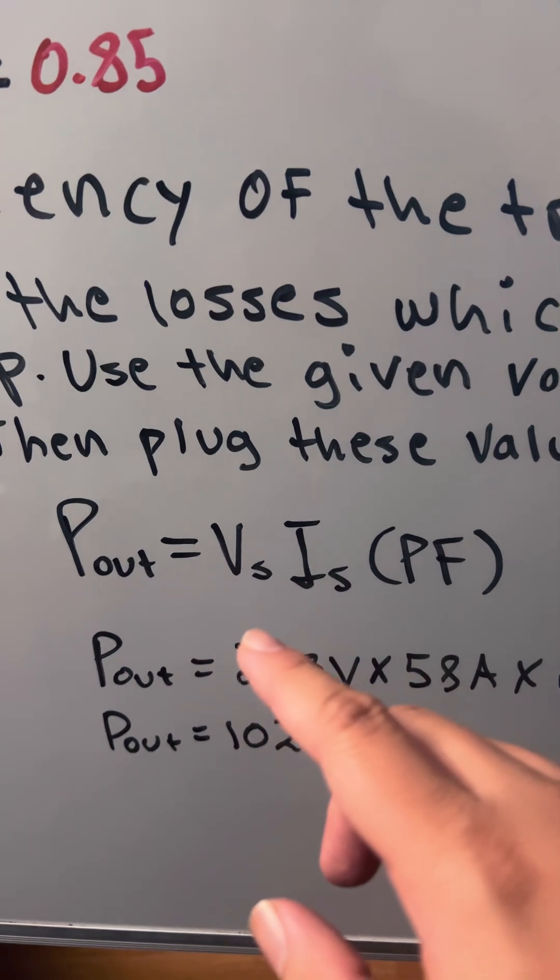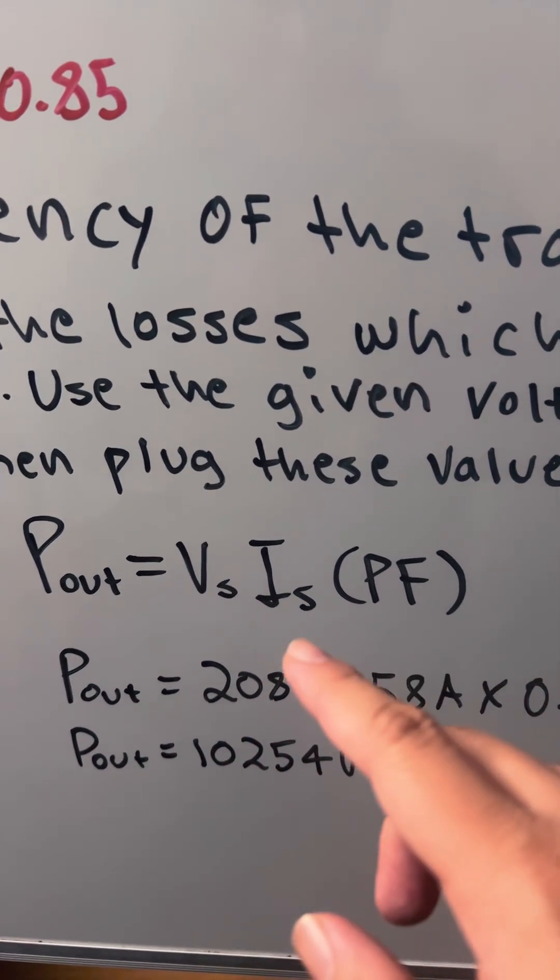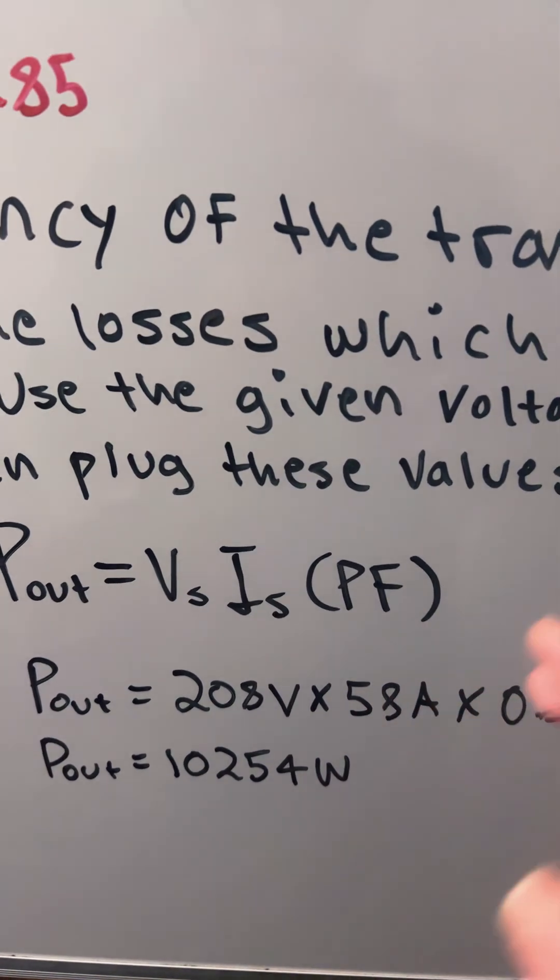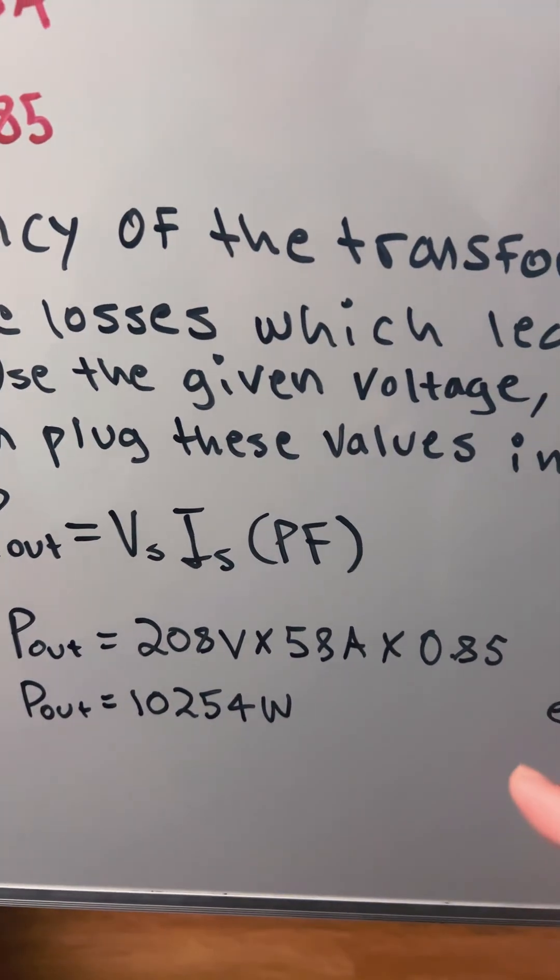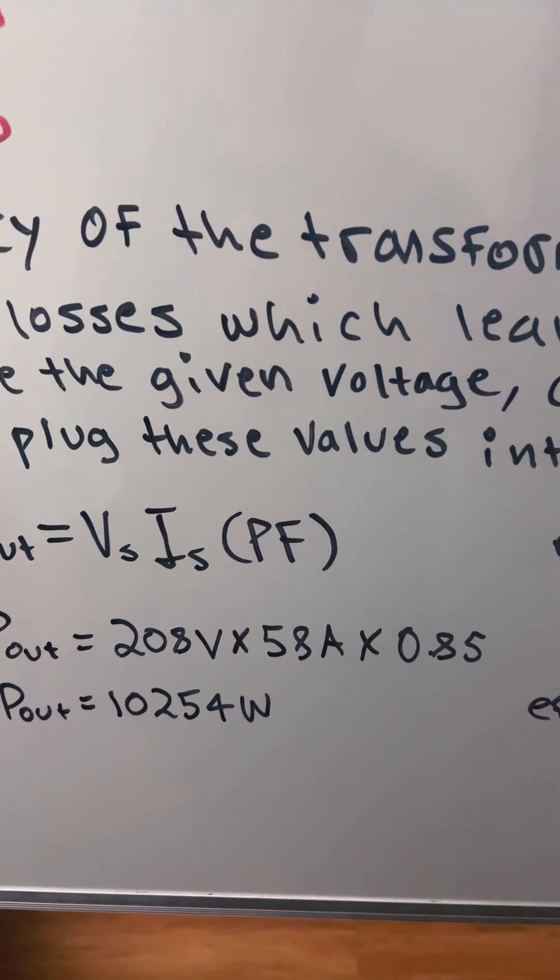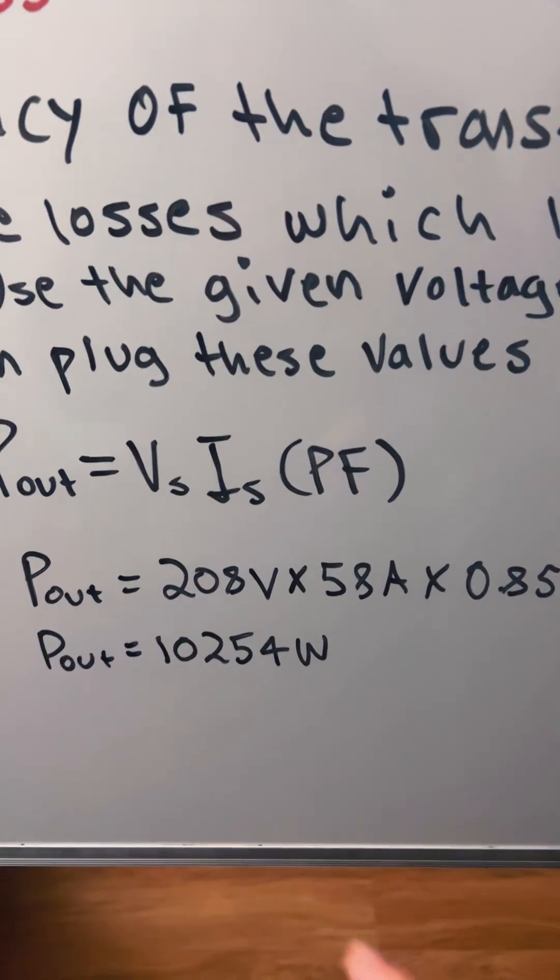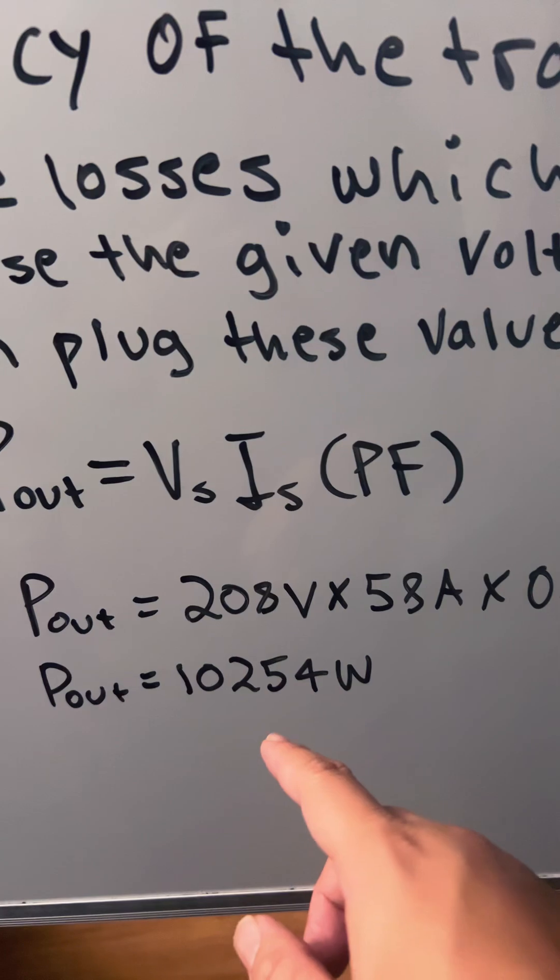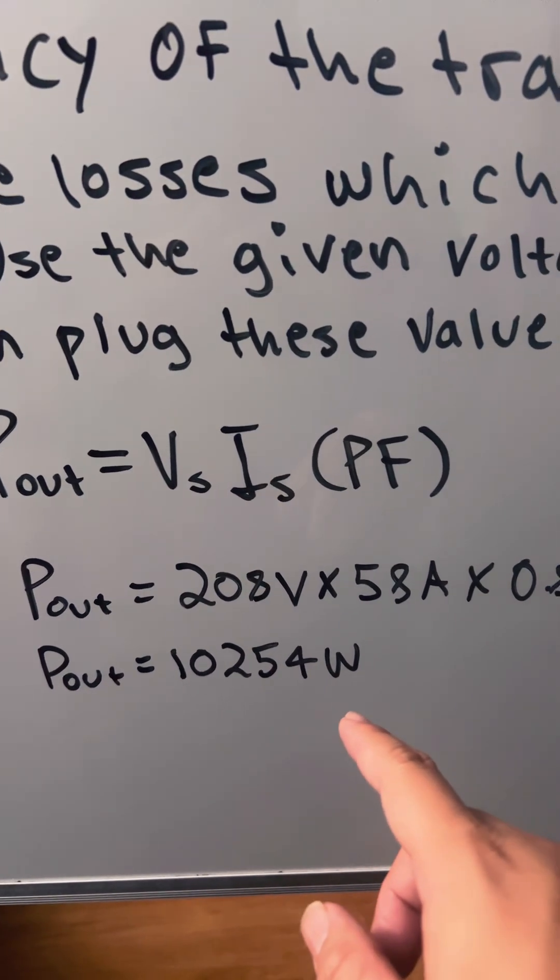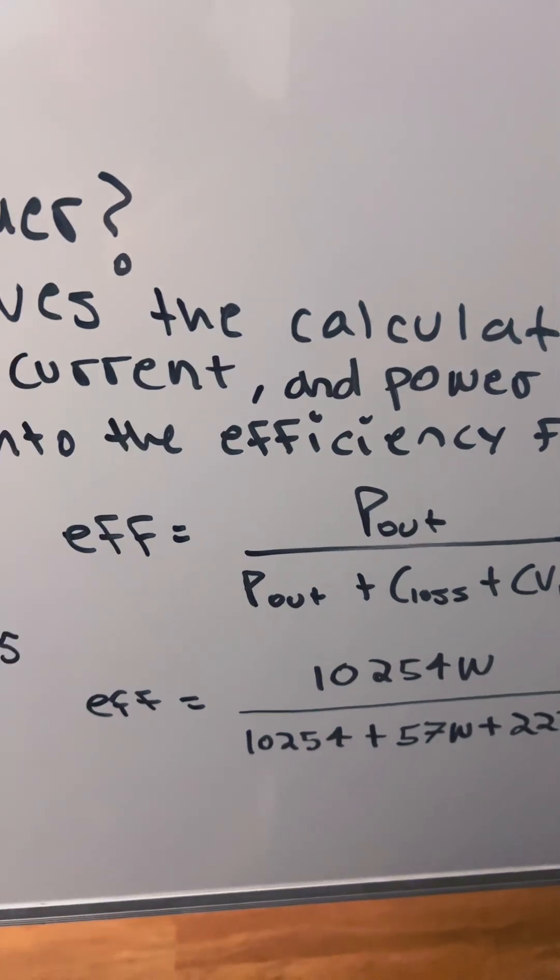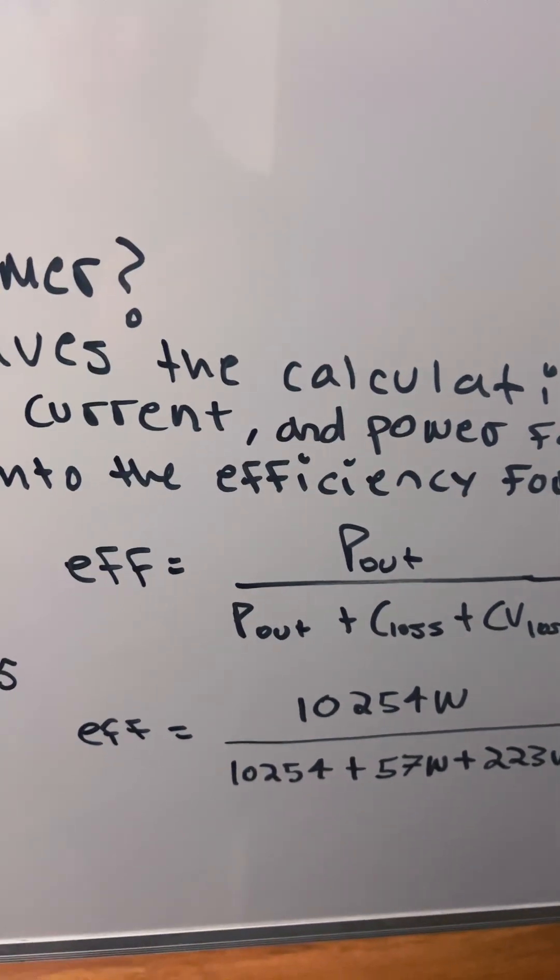P_out equals the secondary voltage times the secondary current times the power factor, so it's 208V × 58A × 0.85, which gives us 10,254 watts. For the final step, we're going to calculate the efficiency.